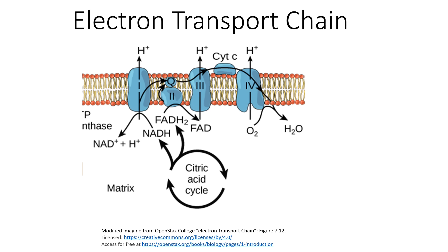Within the matrix there are many NADH molecules, which were gained from glycolysis, beta-oxidation, and the Krebs cycle, also known as the citric acid cycle. Each of these NADH molecules is going to go to the first complex, or complex one, of the electron transport chain.